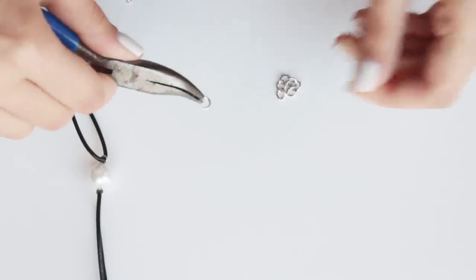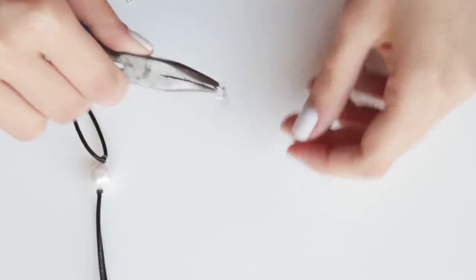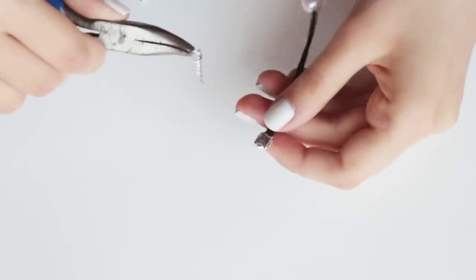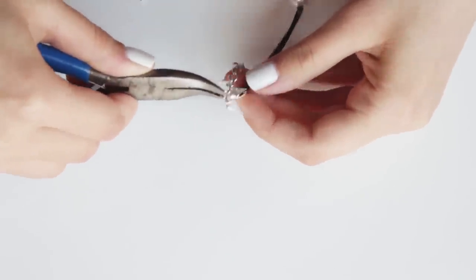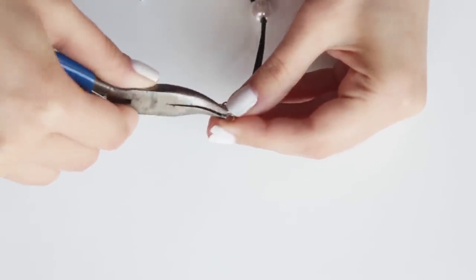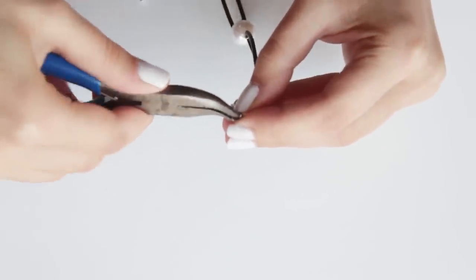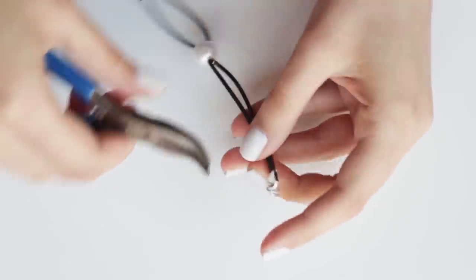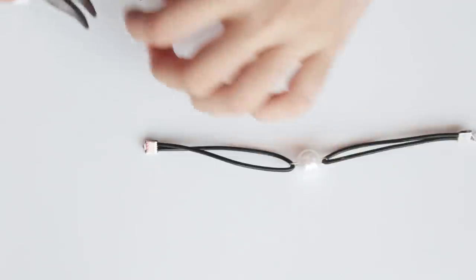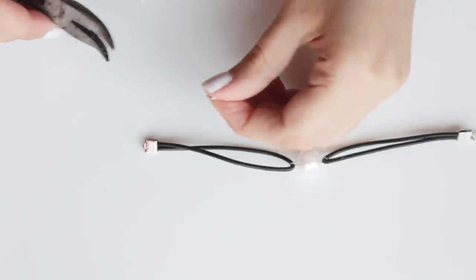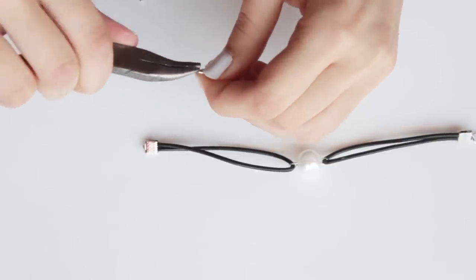Add a small piece of chain if you want to adjust the size later and attach it to one of the crimp ends. And with another jump ring, add the clasp to the other.